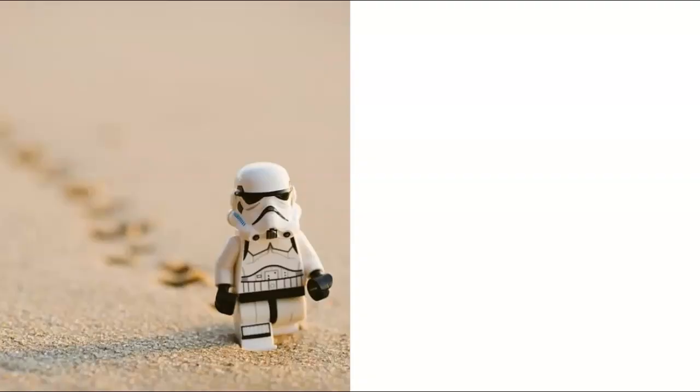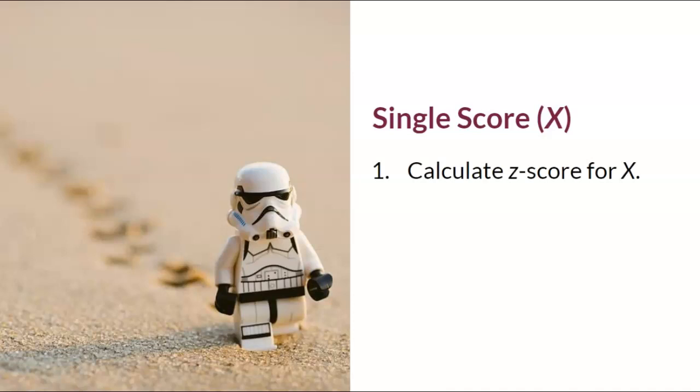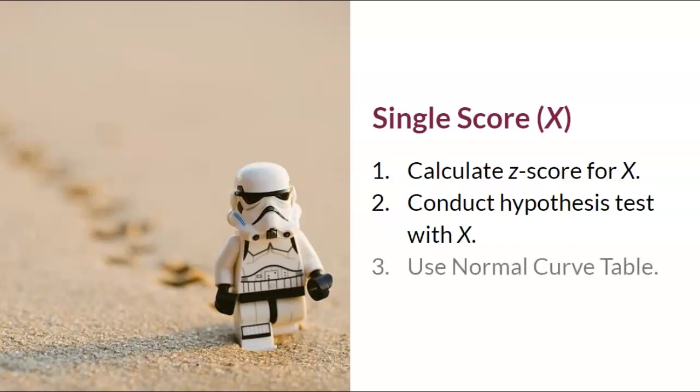Up until this point, we've only been working with a single score, or a single person like this one Lego Star Wars stormtrooper. In Chapter 3, you learned how to calculate a Z-score for a single score X. In Chapter 4, you learned how to conduct a hypothesis test with a single score X. And finally, you learned how to use the normal curve table to find the critical region Z when conducting a hypothesis test for a single score X.